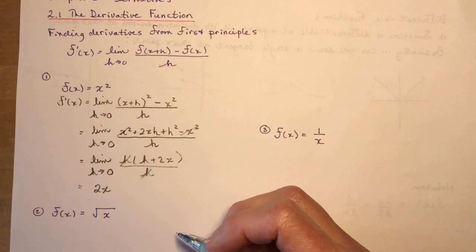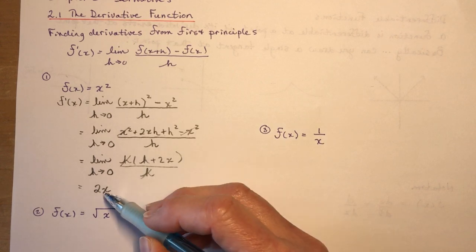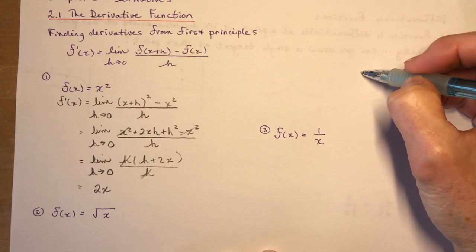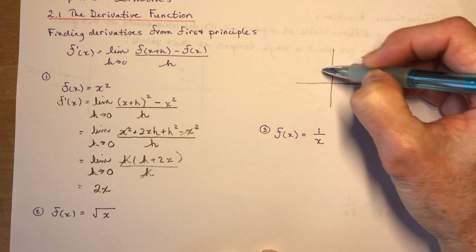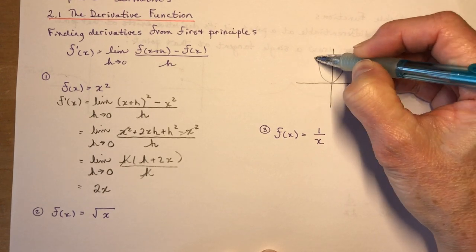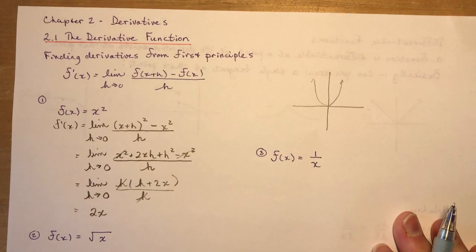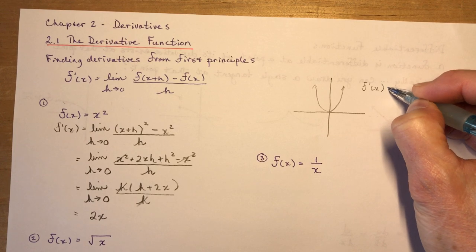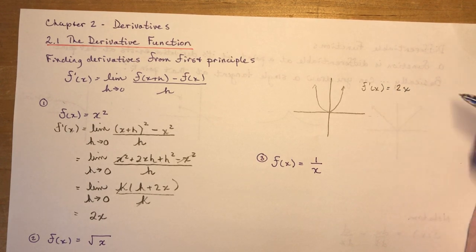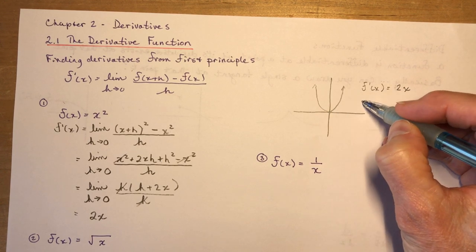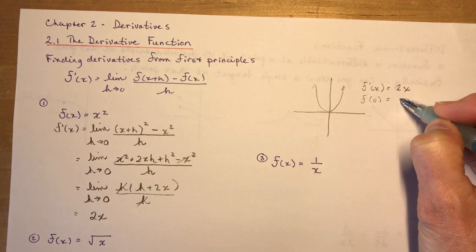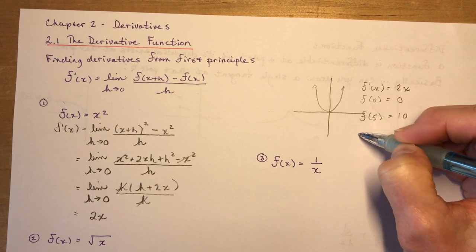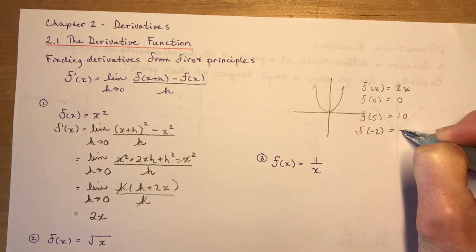This is very complex because if I had the graph of y equals x squared, your super basic parabola, and I know that f prime of x is 2x, that tells me when x was 0, the slope at 0 is 0. What is the slope at 5? The slope at 5 is going to be 10. What's the slope at negative 2? It's going to be negative 4.